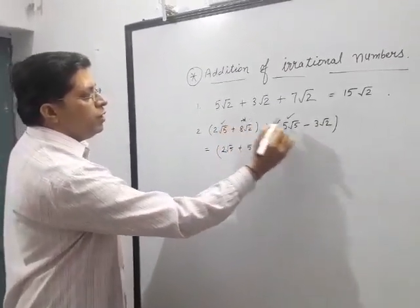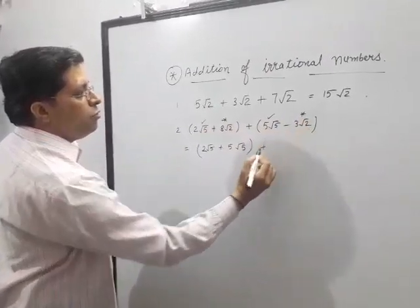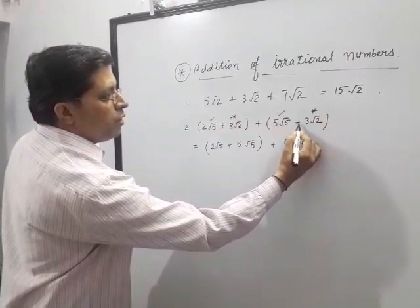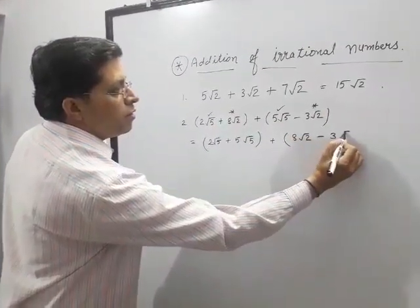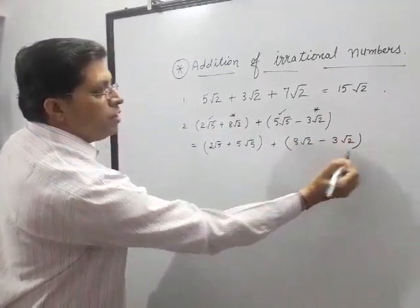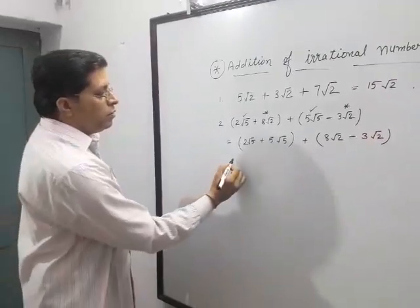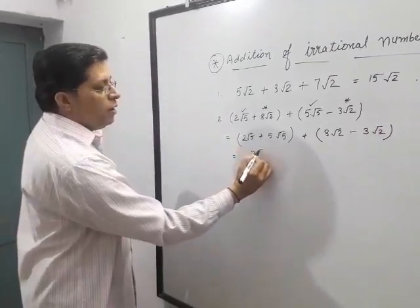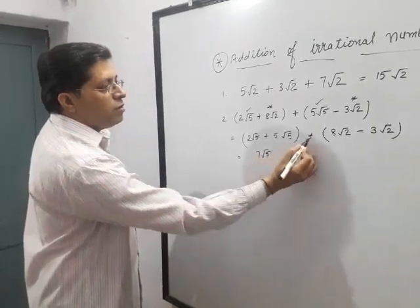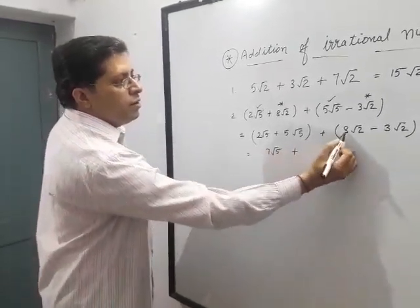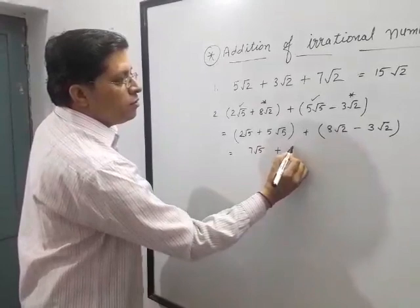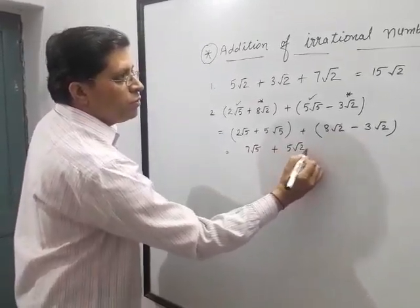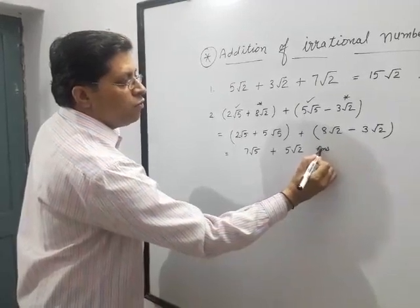Plus these 2, 8 root 2 and 3 root 2. 8 root 2, here is minus sign then minus sign. These 2 are like numbers. Now do accordingly: 2 plus 5 is 7 and this is root 5 as it is. Plus sign, 8 minus 3, this is 5 root 2. This is the answer of this question.